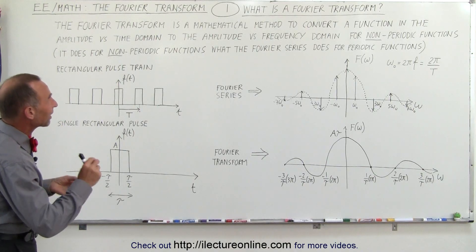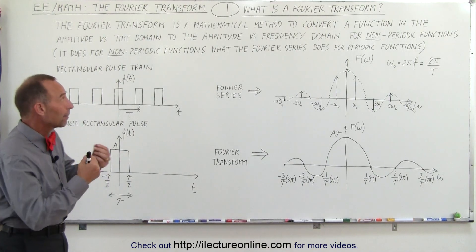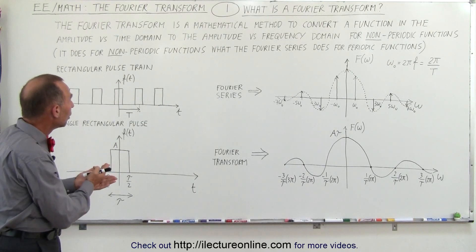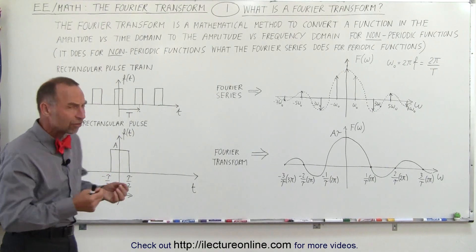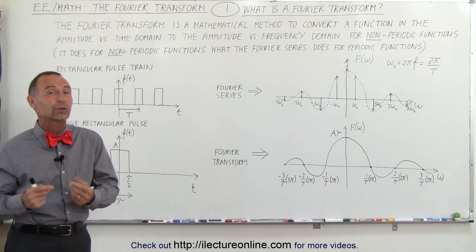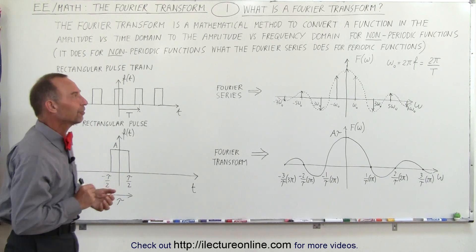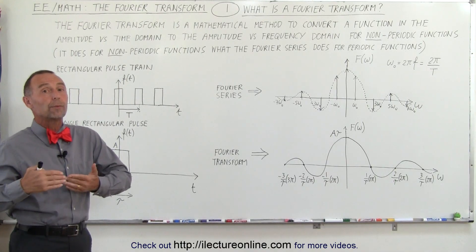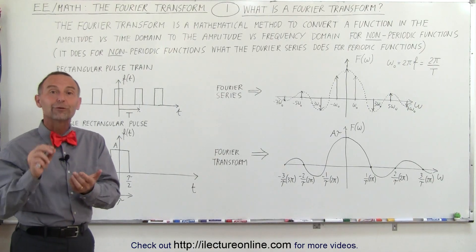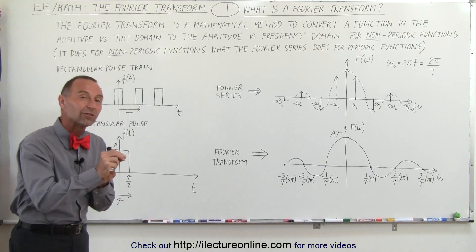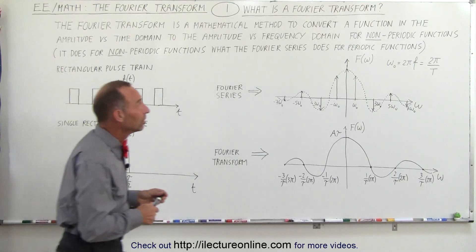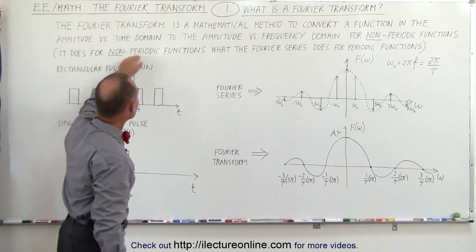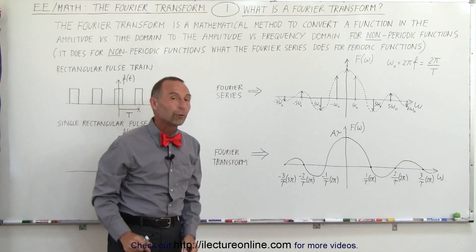The Fourier transform is a mathematical method, just like the Fourier series, to convert a function in the amplitude versus time domain to the amplitude versus frequency domain. That sounds a lot like the Fourier series, because that's exactly what the Fourier series does. But there's one big difference: the Fourier series works on periodic functions. The Fourier transform does exactly what the Fourier series does, but for non-periodic functions.